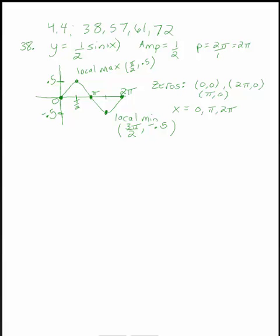So I found between 0 and 2 pi, I found my local max and local min in all of my 0s. I didn't need the calculator. So, 57. 57 wants me to construct a sinusoid with the given amplitude and period that goes to the given points. They want me to come up with an equation.